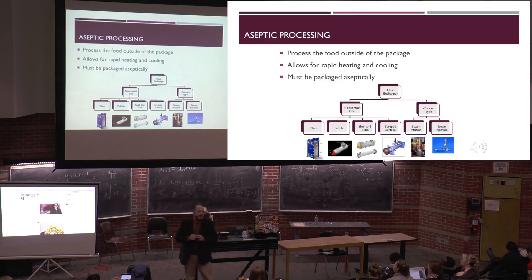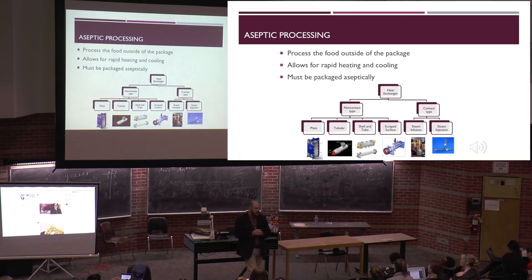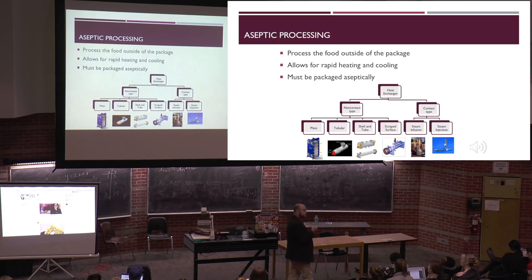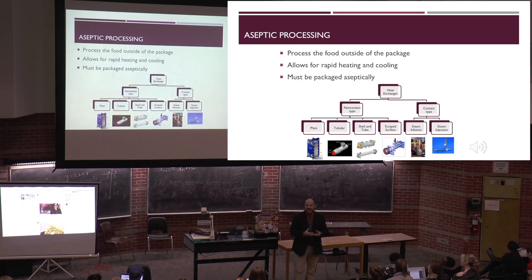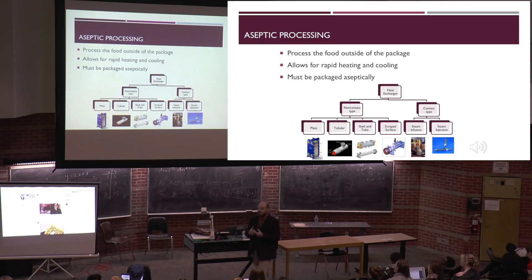It also depends on whether or not that food can support the chemical changes that happen associated with cooking, things like caramelization. For pasteurized juice, caramelization is not desirable - when you talk about orange juice that's been pasteurized, you don't want caramelization. Maillard reaction - if you're talking about a can of baked beans, it doesn't matter if it developed a cooked flavor. That's seen as a positive attribute to that product.